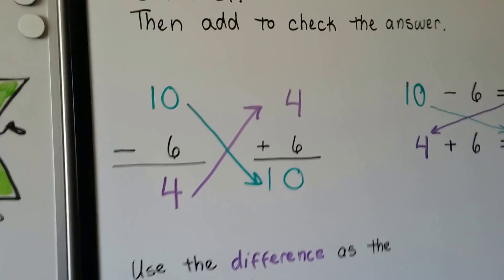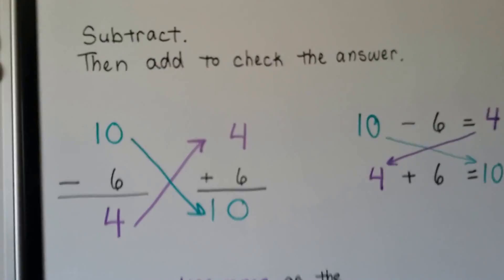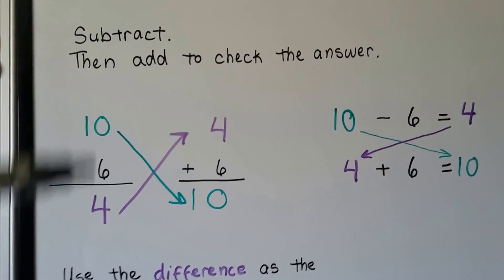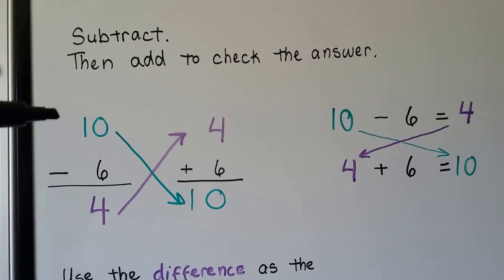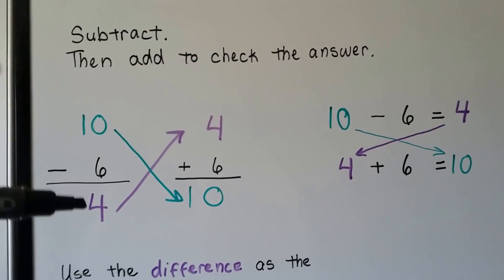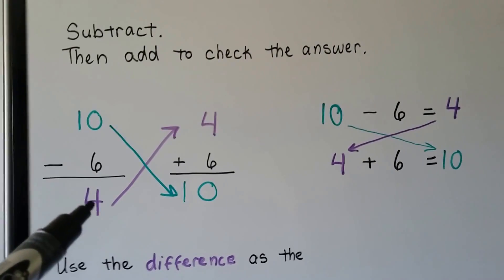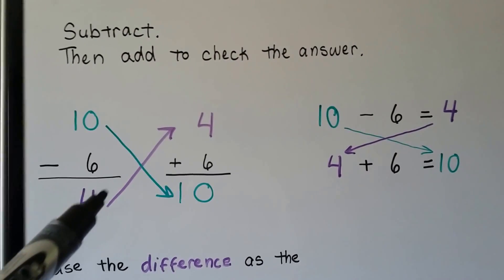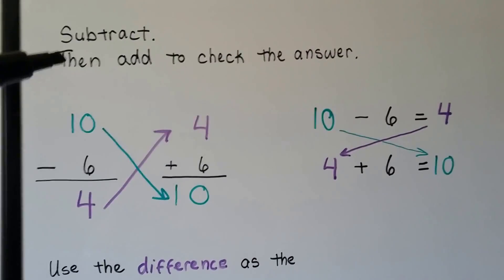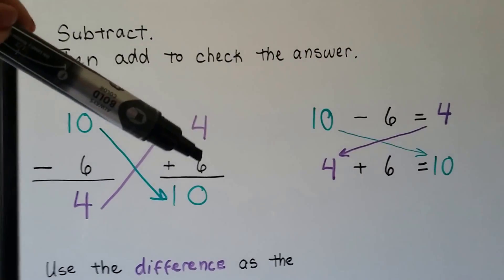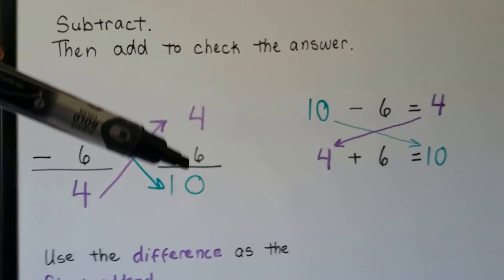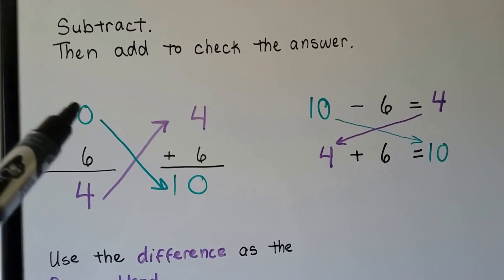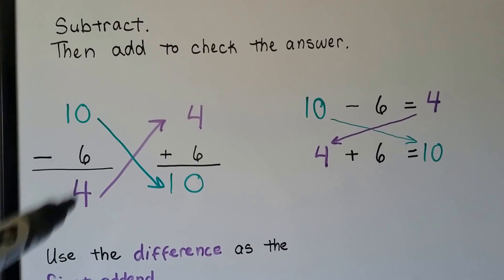So we subtract, then we add to check the answer. If the problem is written stacked vertically, we have ten minus six, which equals four. This difference of four becomes the addend, and we add it to the other part, six. Four plus six is ten — our sum is the same as the minuend, so we know we did our subtraction correctly.